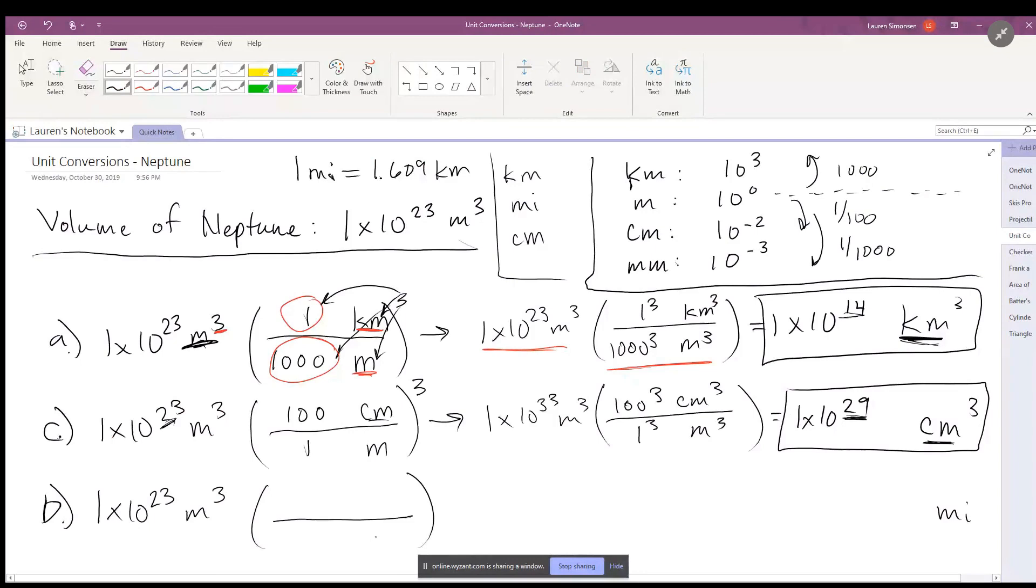So once again, we need to get to miles, but we're going to go through kilometers. So we put meters on the bottom, we have to go to kilometers, and then we are going to go from kilometers on the bottom to cancel to miles.